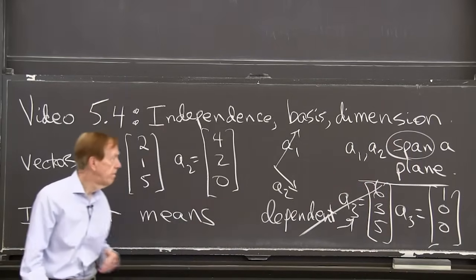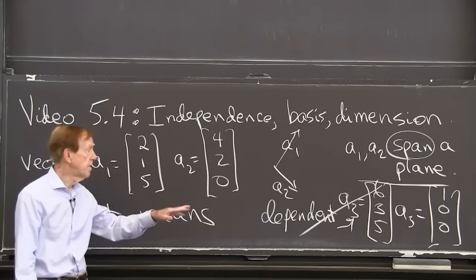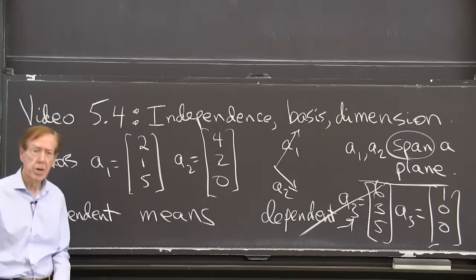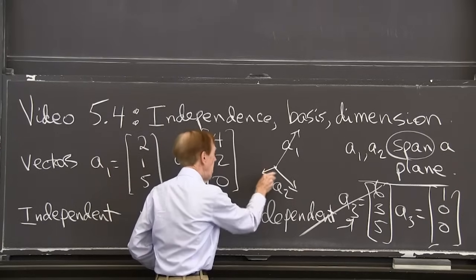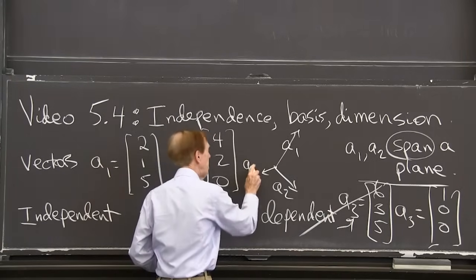I believe, I hope I'm right, that 1,0,0 is not a combination here. I think 1,0,0 goes off. It's pretty short. There's a3.